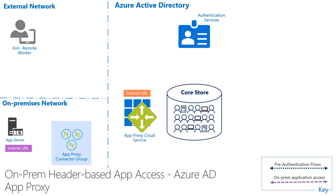In addition to enabling pre-auth, this app is also set up for single sign-on for header-based authentication. During single sign-on setup, the specific headers the application needed were configured. Any attribute synced to Azure AD will be available to configure as a header value. Now let's walk through how access will look for a header-based app.